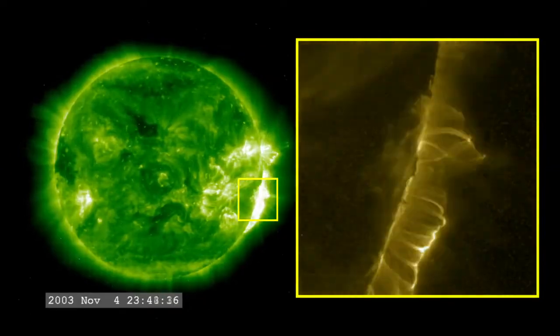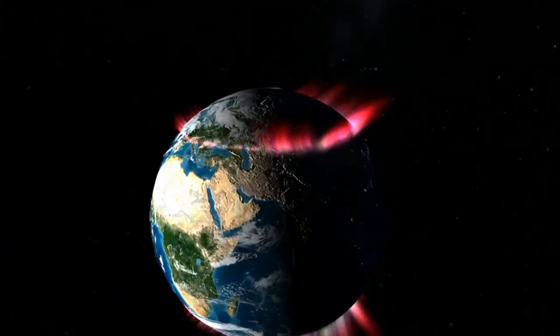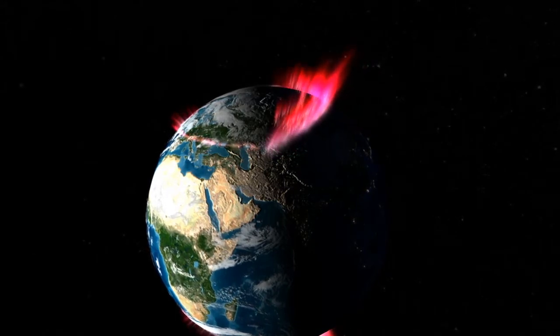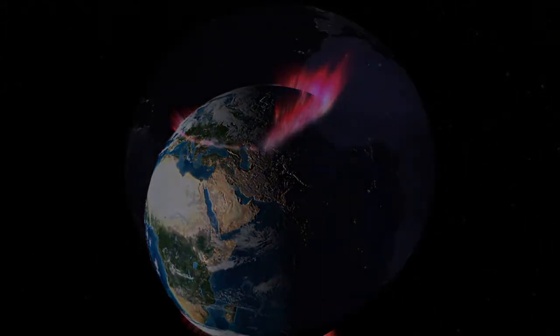A powerful X-class flare like that can create long-lasting radiation storms, which can harm satellites, and even give airline passengers flying near the poles small radiation doses. X-flares also have the potential to create global transmission problems and worldwide blackouts.